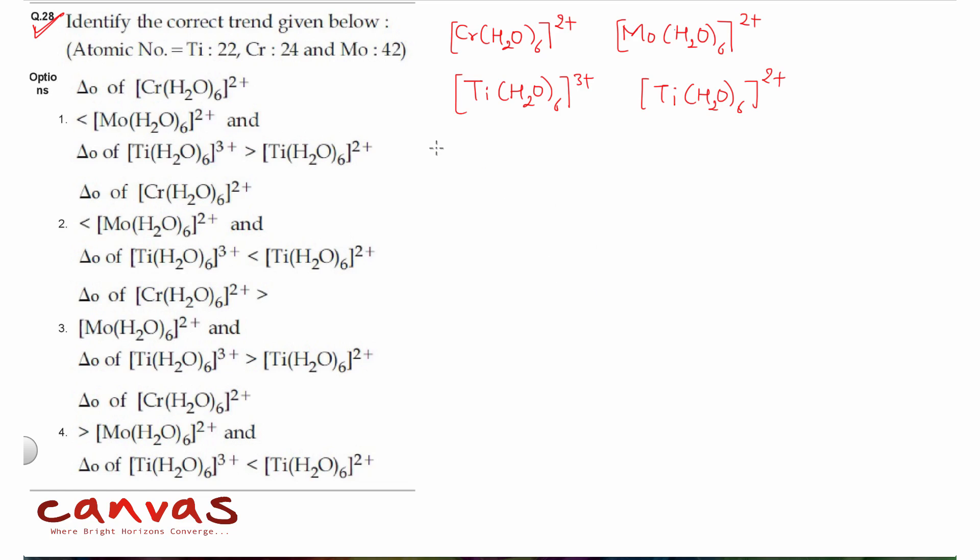For the same element, as the oxidation state increases, the octahedral splitting increases. Titanium 3+ has higher delta O than titanium 2+ because it has higher oxidation state and more charge density. Higher oxidation state means higher crystal field splitting energy.